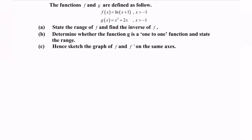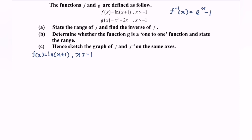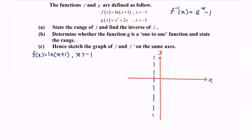Part C: sketch the graph of f and f inverse on the same axis. We already identified that f inverse of x equals e to the power of x minus 1. We now sketch f(x) equals ln(x + 1) with domain x greater than negative 1. Since x must be greater than negative 1, x equals negative 1 is a vertical asymptote.